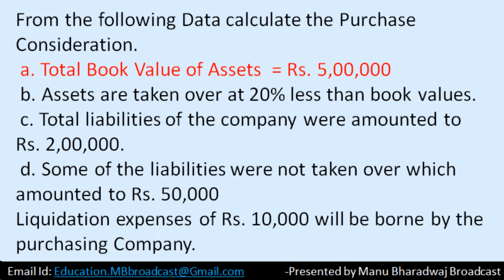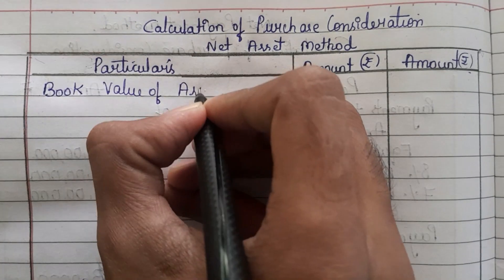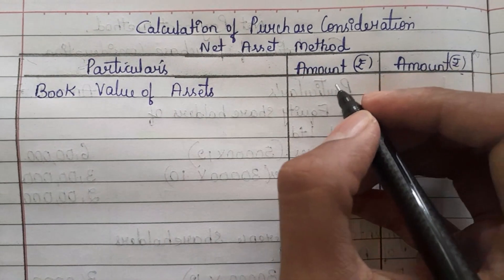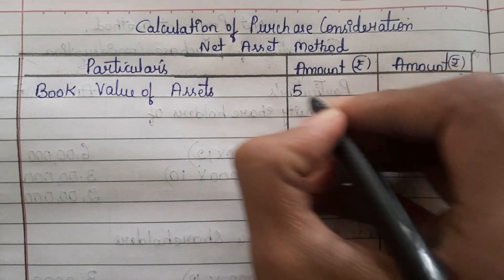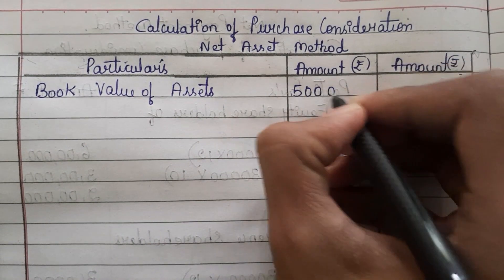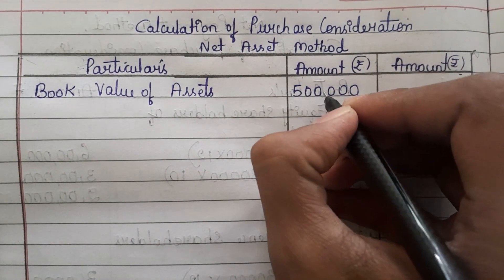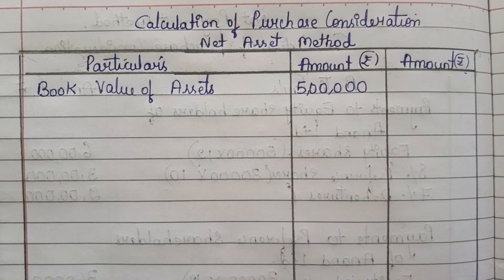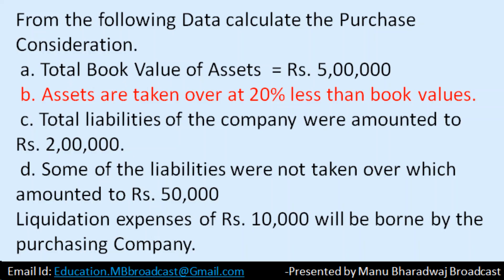The first item in the question: total book value of assets is rupees 5 lakh. So here you write 'book value of assets' as 5 lakh and write that 5 lakh in the inner column.